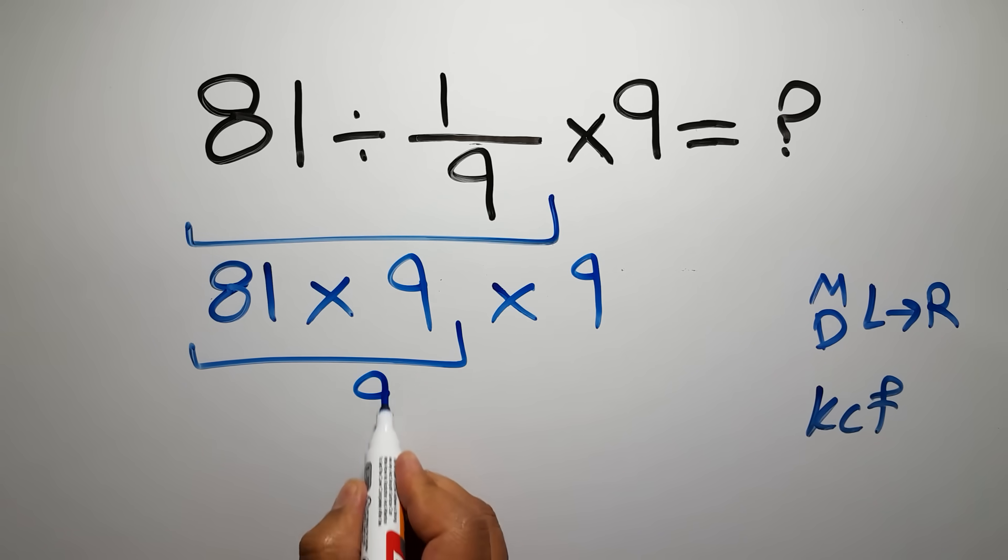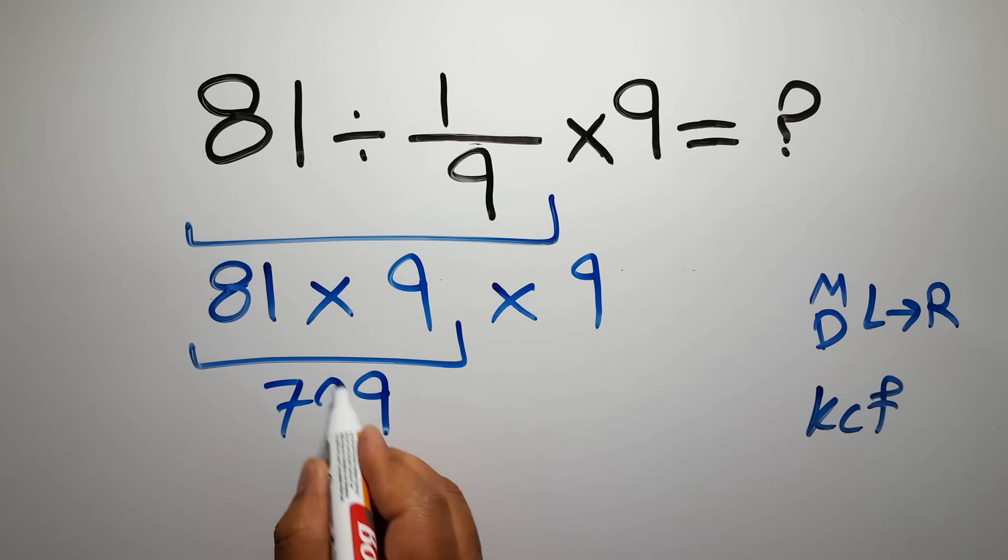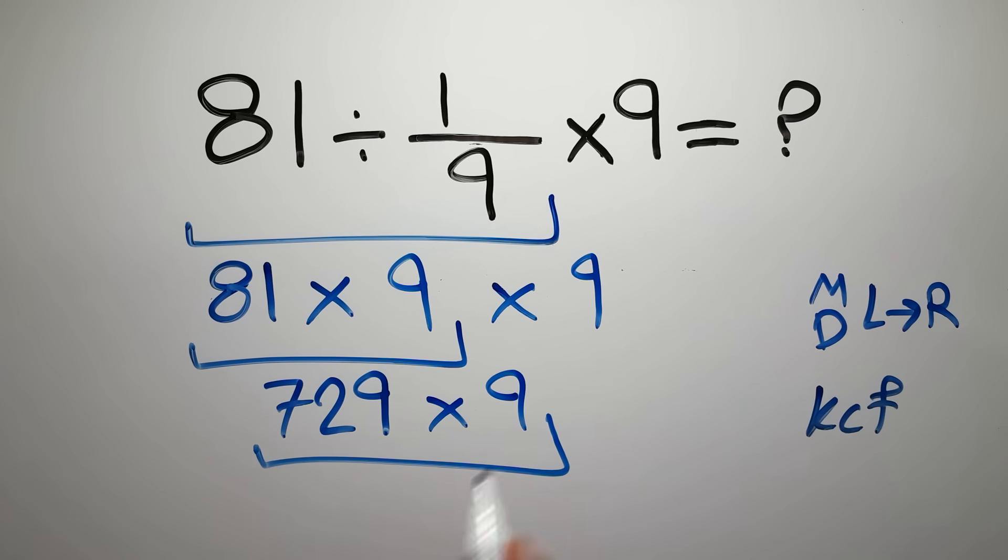Okay, 81 times 9 gives us—9 times 1 is just 9, and 9 times 8 gives us 72, so 729. Times 9: 9 times 9 gives us 81, so 1 and 8.